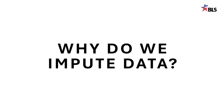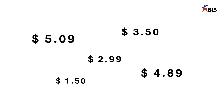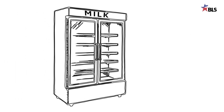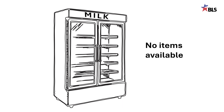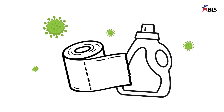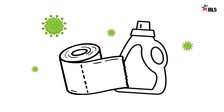Why do we impute data for the Consumer Price Index? Each month, BLS collects around 100,000 prices for various items and services to measure price change. Sometimes we cannot collect the price of the item we're trying to measure because there aren't any items available on the shelf for purchase. BLS ran into this frequently in the early days of the COVID-19 pandemic, when products like toilet paper and cleaning products were rapidly selling out and stores couldn't replenish them.